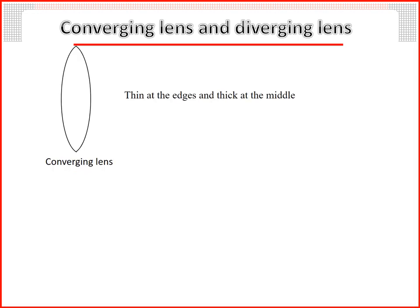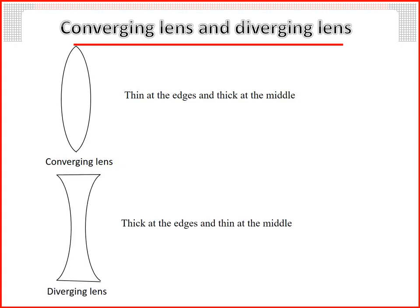Converging lens: thin at edges and thick at the middle. Diverging lens: thick at the edges and thin at the middle.